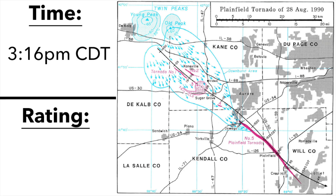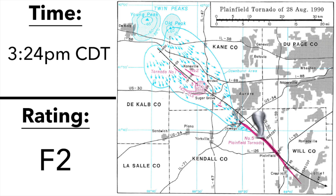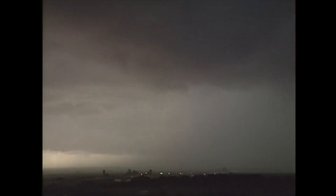Around 3:16 p.m., what would become the Plainfield F5 tornado touched down just northwest of Oswego in Kendall County as an F1, crossing the Fox River and moving steadily southeastward towards Grand Park on the Kendall-Will County line. There, the tornado would increase its destructive power to an F2 to F3 rating. Also around this time, things started to change very quickly for Plainfield. What started out as a hot, sunny day became very dark, with clouds taking on a yellow-green hue.